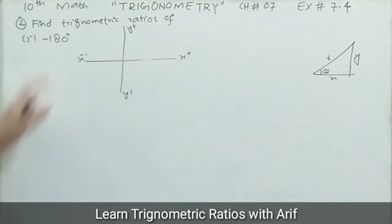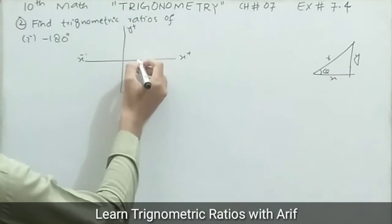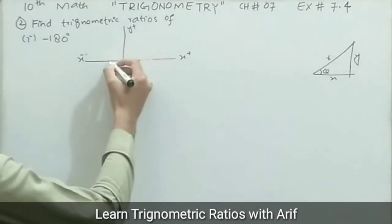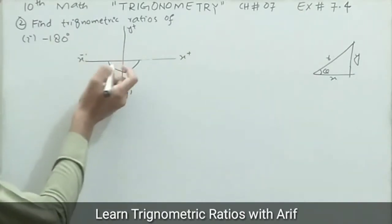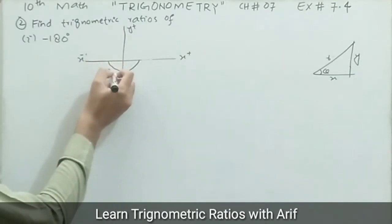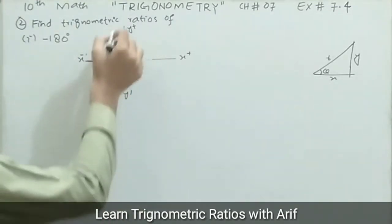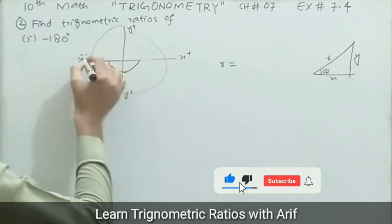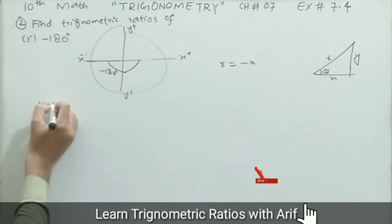For a positive angle we move anti-clockwise, but for a negative angle we move in the clockwise direction from the positive x-axis. Moving clockwise, negative 90 degrees is reached first, and continuing completes a half circle equal to negative 180 degrees, placing the angle along the negative x-axis. The radius r lies along the negative x-axis, so r equals negative x.